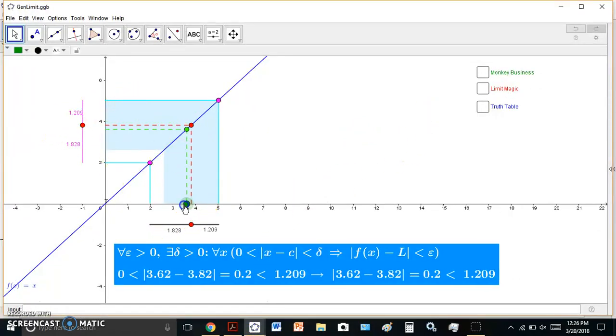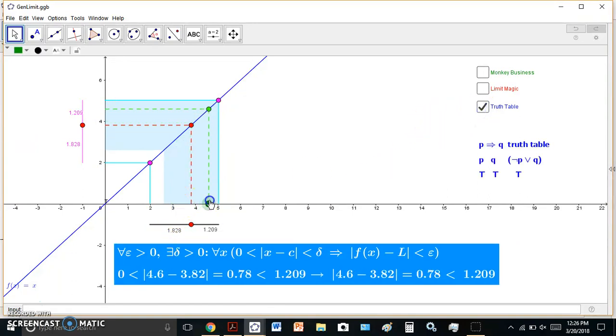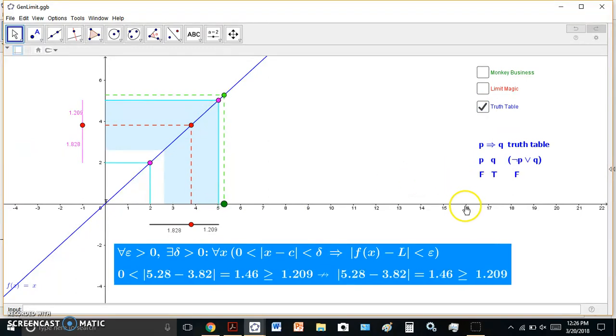So basically anywhere in the shaded region, the truth table must show true, right? Outside of the shaded region, it's false.